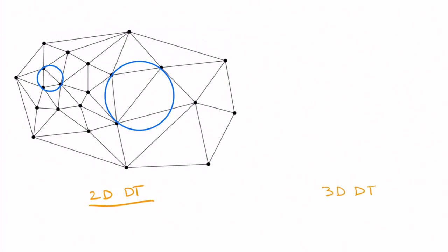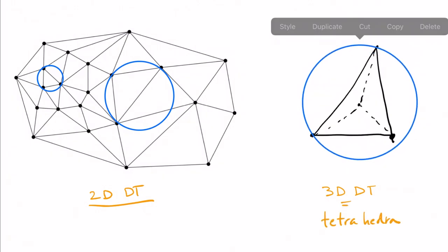In three dimensions, a simplex is a tetrahedron. And to be Delaunay, this tetrahedron needs to have its circumsphere empty.